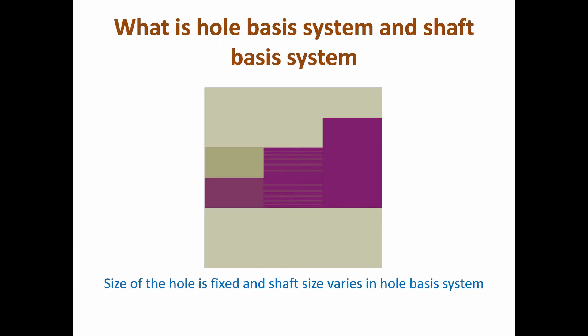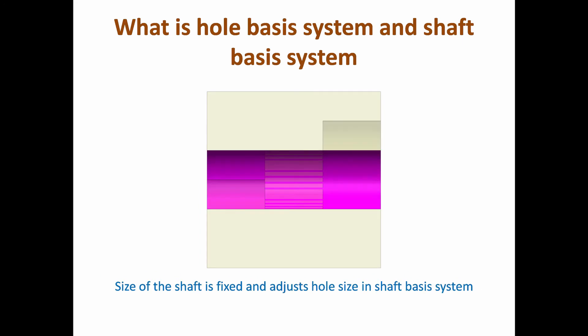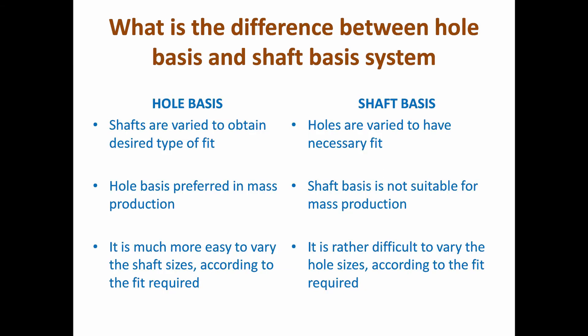What is the hole basis system and shaft basis system? In the hole basis system, the size of the hole is fixed and the shaft size varies. In the shaft basis system, the size of the shaft is fixed and the hole size is adjusted.